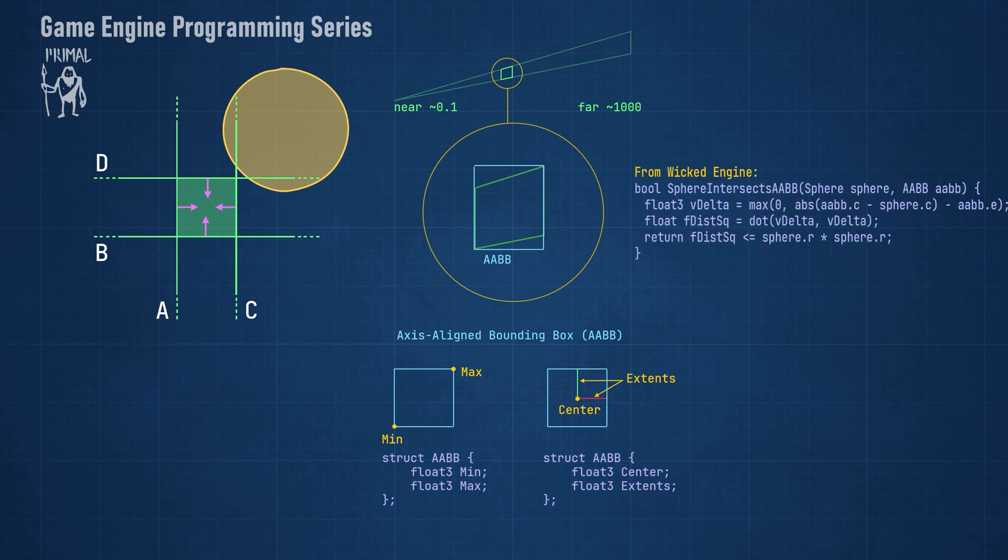Using this second representation, we can test if a sphere intersects an axis-aligned bounding box. We use this function to get an exact result as to whether or not the sphere intersects the box.